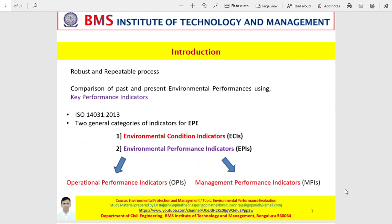This process of evaluating a set of environmental performance indicators is carried out by comparing the past and present environmental performances using a set of key performance indicators. Essentially a part of ISO 14031-2013, there are two general categories of indicators for environmental performance evaluation: the first is the environmental condition indicators and the second is the environmental performance indicators. Environmental performance indicators are further categorized into two types: operational performance indicators and management performance indicators.